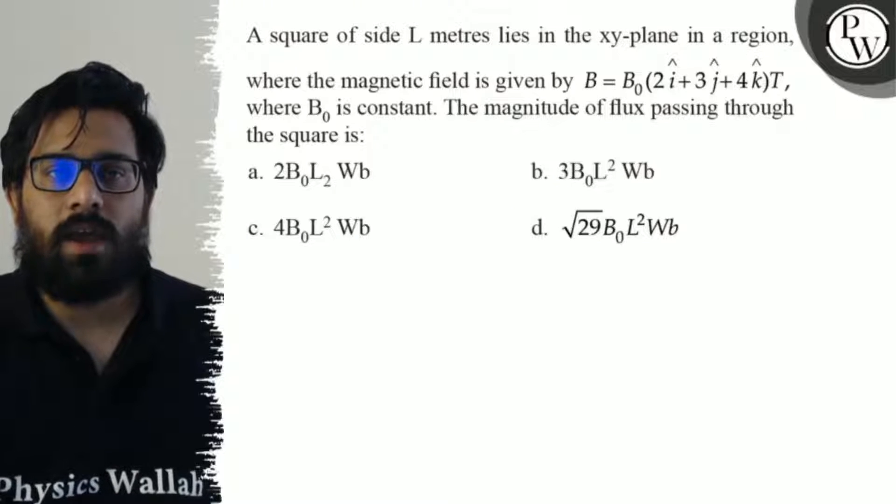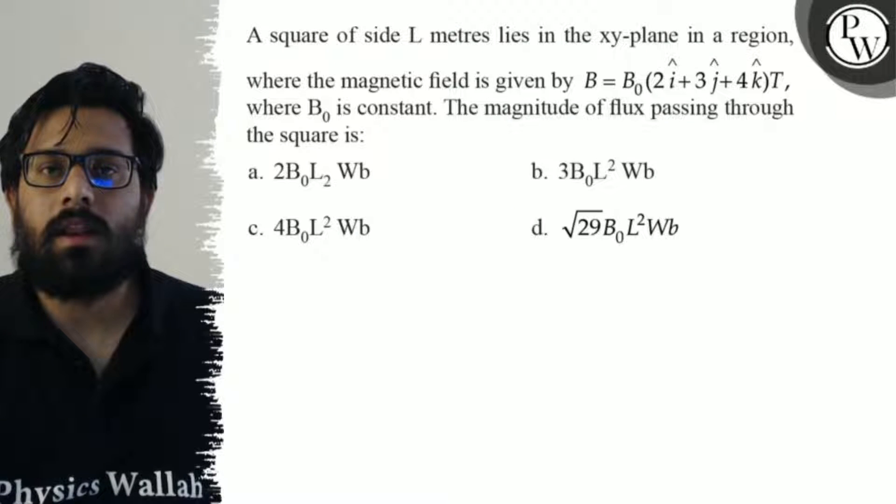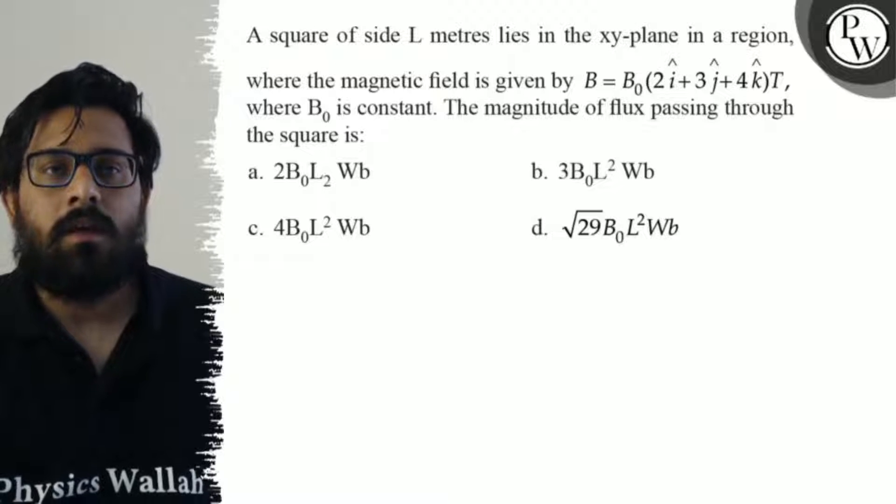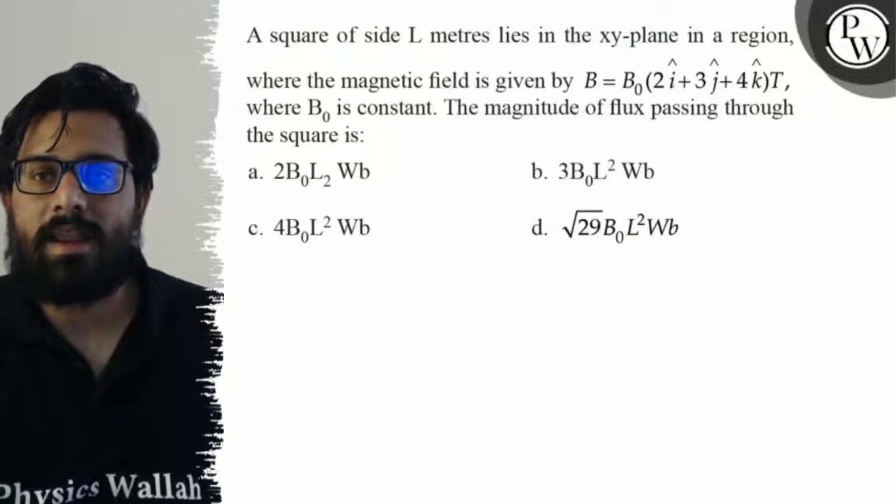Hello bachos, so let's see the question. A square of side L meters lies in the xy-plane in a region where the magnetic field is given by B = B₀(2î + 3ĵ + 4k̂) Tesla.